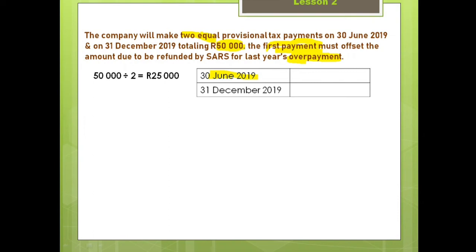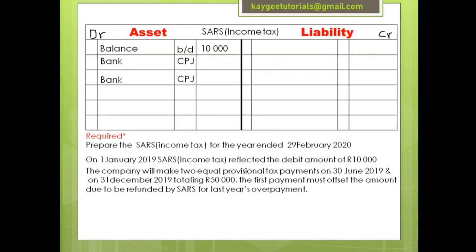On 30 June, we were supposed to pay R25,000, but we subtract the R10,000 overpayment — so on 30 June we will pay R15,000. On 31 December, the company will pay R25,000, because there is no other amount the company owes SARS. So the first payment is R15,000 and the second payment is R25,000. Let's record those amounts.